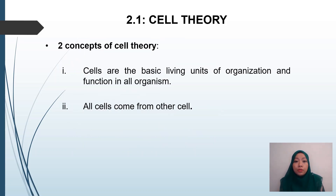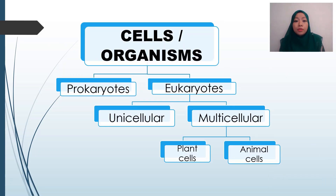Next, Section 2.1: Cell Theory. There are two concepts of cell theory. Number one: cells are the basic living units of organization and function in all organisms. And all cells come from other cells, meaning cells are formed by developing from other cells. Cells or organisms can be divided into two: prokaryotes and eukaryotes.